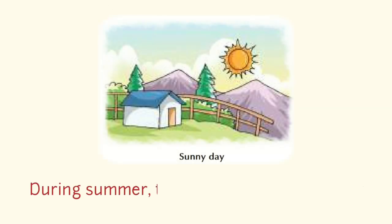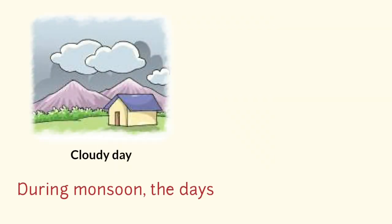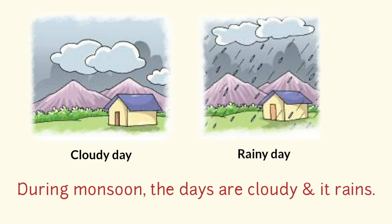During summer, the days are warm and sunny as the sun shines brightly, so it is called a sunny day. And during monsoon, the days are cloudy and it rains. Grey or plague-colored clouds make the sky cloudy, so it is called a cloudy day.